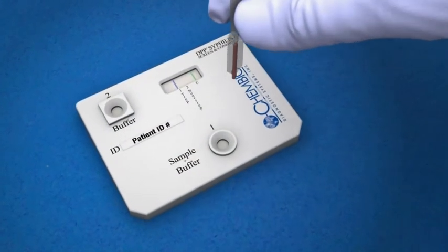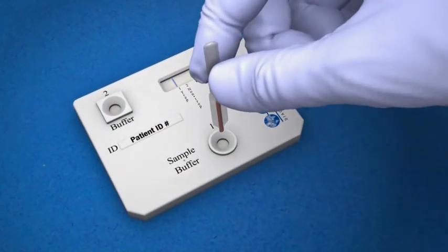Applying the sample: To transfer the sample to well 1, line up the tip of the micro safe tube with the sample plus buffer well 1 and squeeze the bulb. The blood sample will flow onto the sample pad.